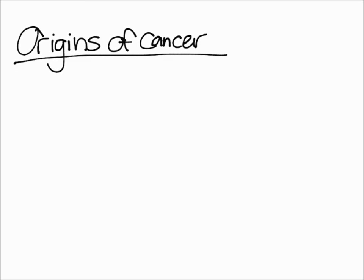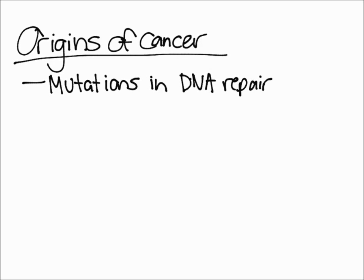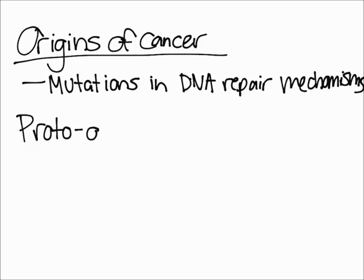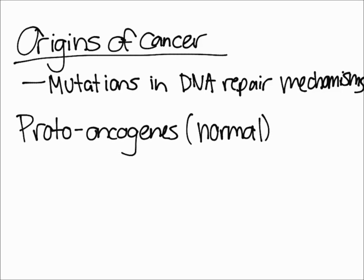In this video, I want to talk about the origins of cancer. What happens is mutations in DNA repair mechanisms cause cancer. Proto-oncogenes are the genes that promote the cell cycle in various ways — they are normal genes that stimulate cell division.